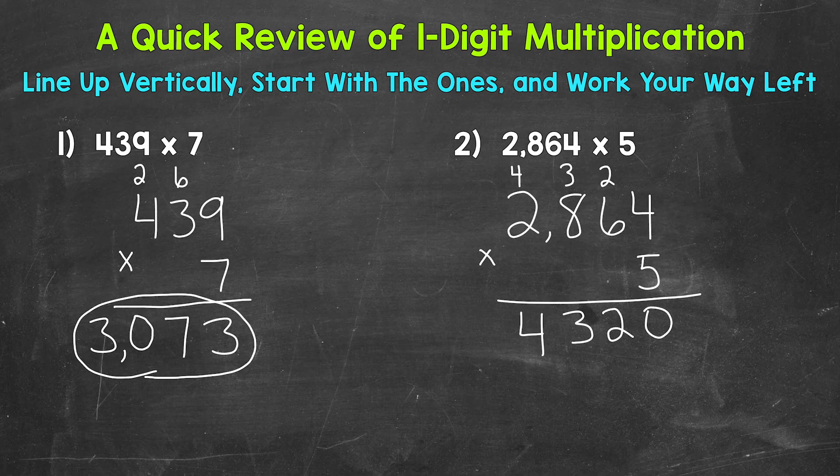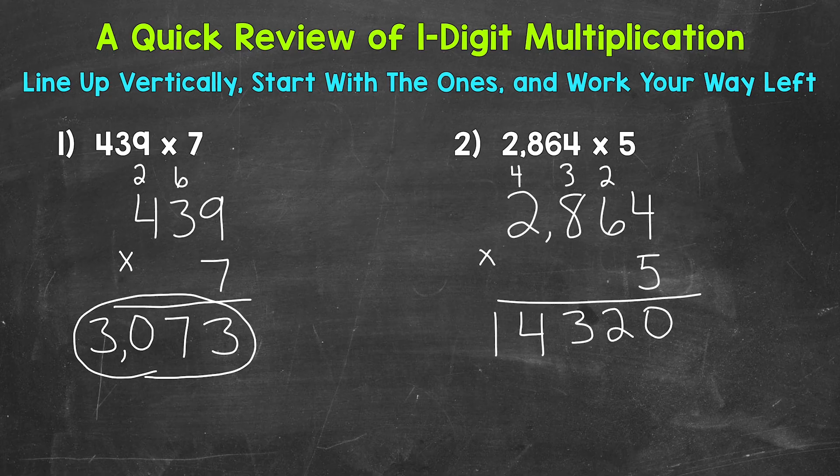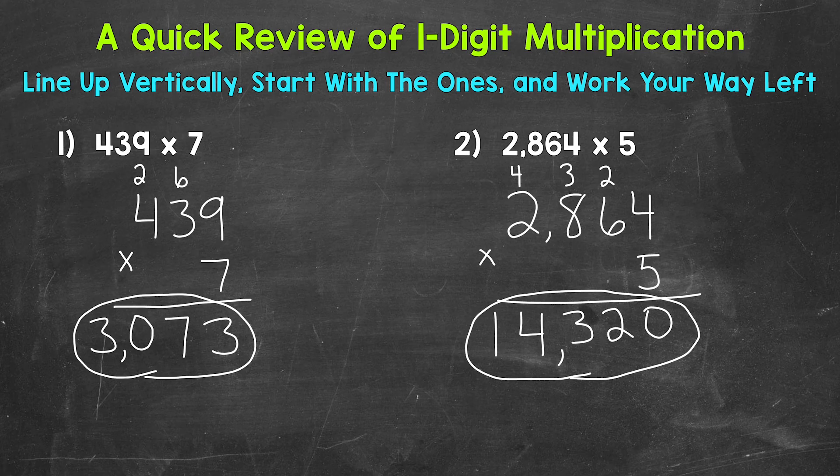So we'll put our 4, and then we do not have any more places to the left. So we just bring our 1 straight down. We have a comma here. And our final answer is 14,320.